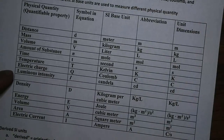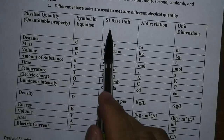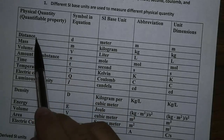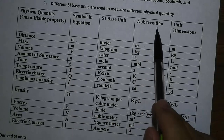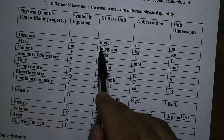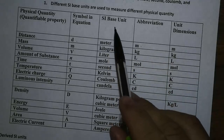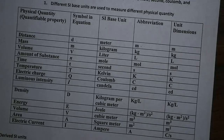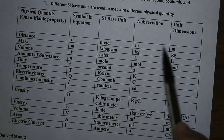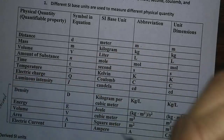Looking at the table, we have the physical quantity that each SI base unit is used to measure, the symbols that represent the physical quantity in an equation, and the abbreviation of the SI base unit — because when we record measurements, we don't write the whole word meter or kilogram. We also have the dimension of the unit. Since these are the fundamental units, the dimension is the same as the abbreviation throughout, until we get to something called the derived SI unit system, which we'll discuss later.